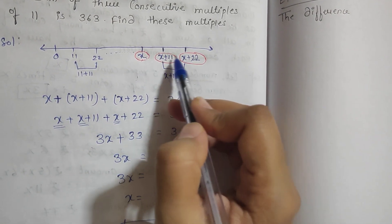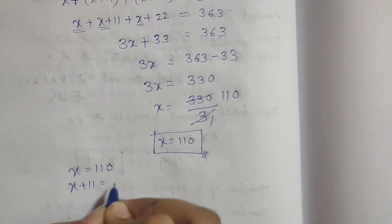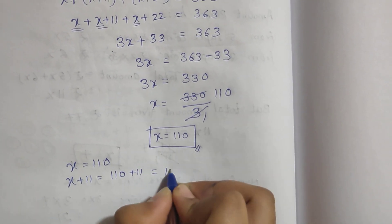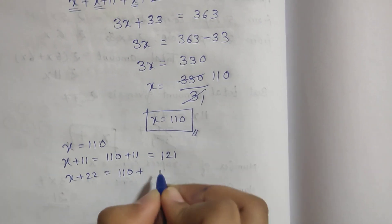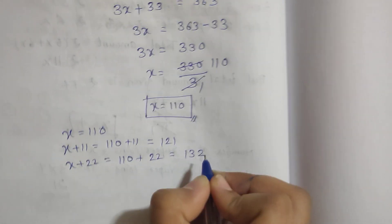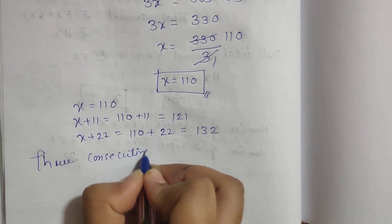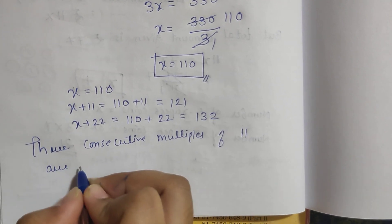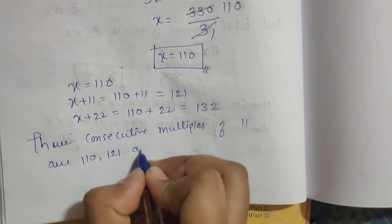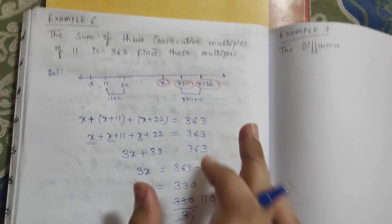So x plus 11 equals 110 plus 11, which is 121, and x plus 22 equals 110 plus 22, which is 132. Therefore, the three consecutive multiples of 11 are 110, 121, and 132. This is the complete solution for Example 6.